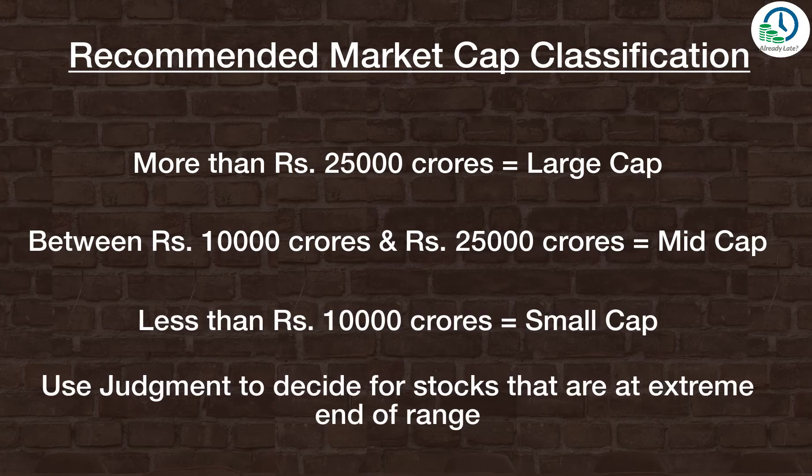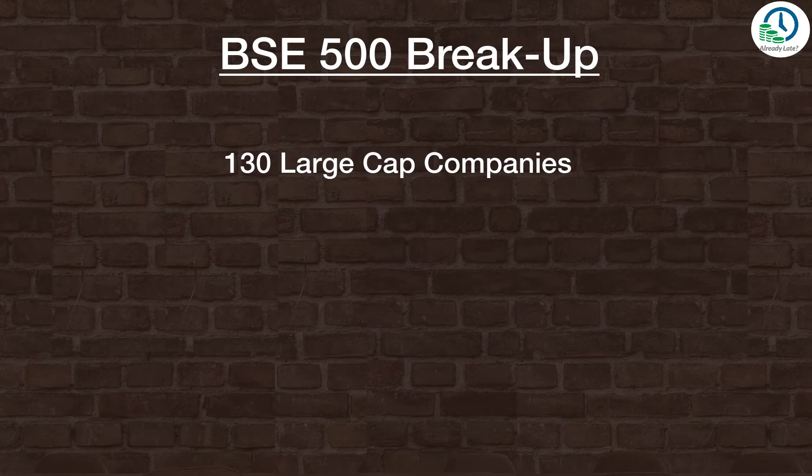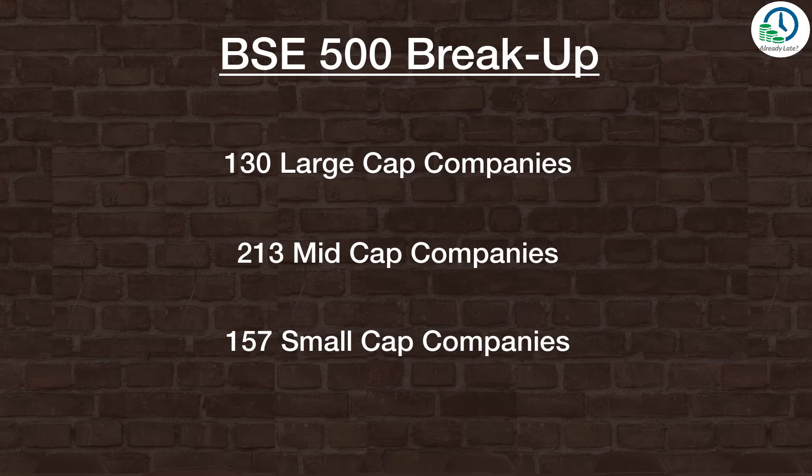Use your judgment for stocks very near to the threshold — for instance, if a company is at ₹24,800 crores, decide based on context. If I were to break the top 500 stocks — the BSE 500 index — into large, mid, and small based on my suggested ranges, you would have 130 large cap companies, 213 mid cap companies, and 157 small cap companies.